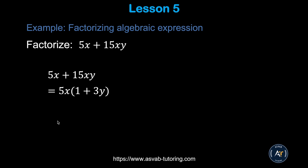Next, we'll learn how to factorize — a very important concept for your AFOQT test. For 5x plus 15xy, find the common factor. The common factor is 5x. Dividing each term by 5x: 5x divided by 5x is 1, and 15xy divided by 5x is 3y. So the factored form is 5x(1 + 3y).